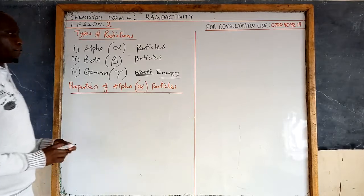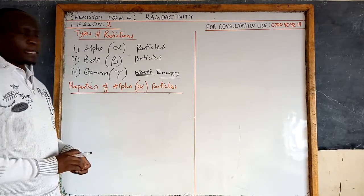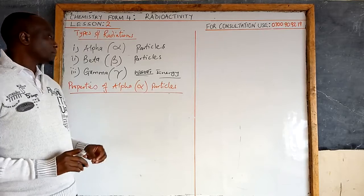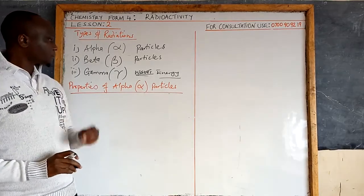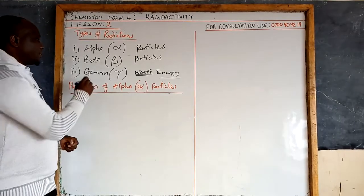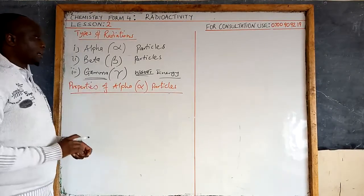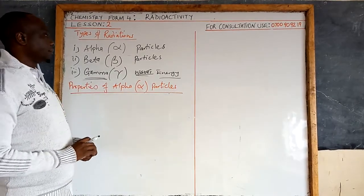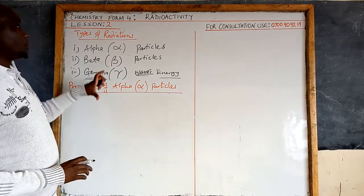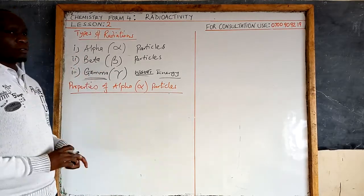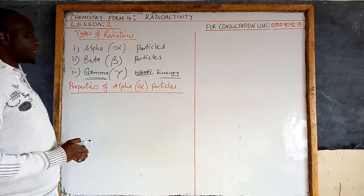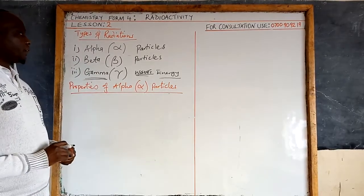For those taking physics, if you look at the electromagnetic spectrum, you will find that gamma rays are there as a form of energy. So these are the three types of radiation emitted by radioactive substances when they undergo radioactivity.